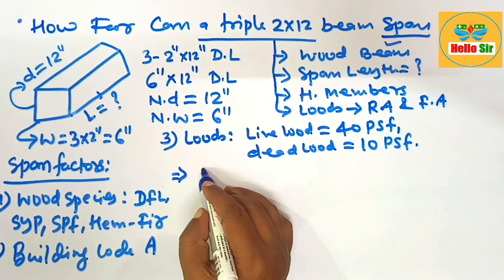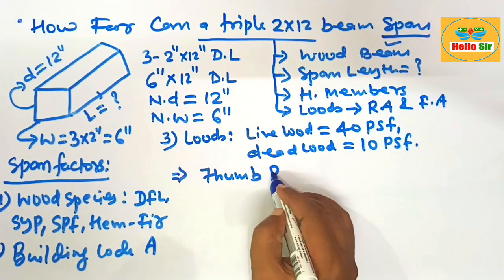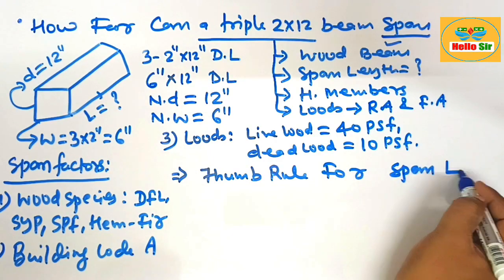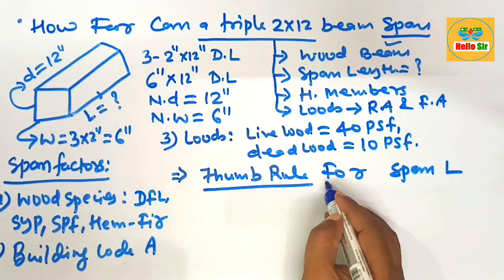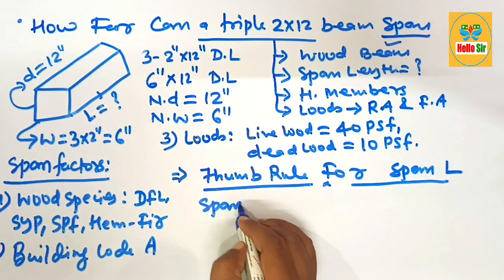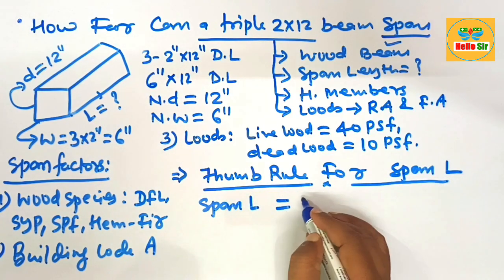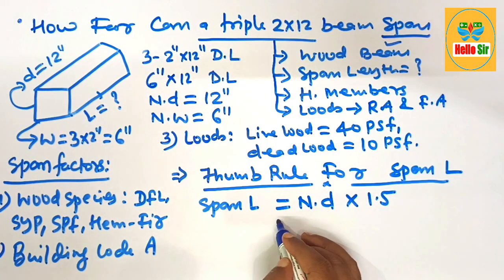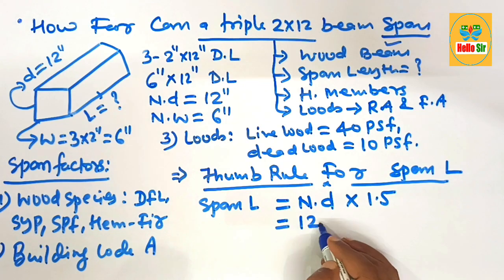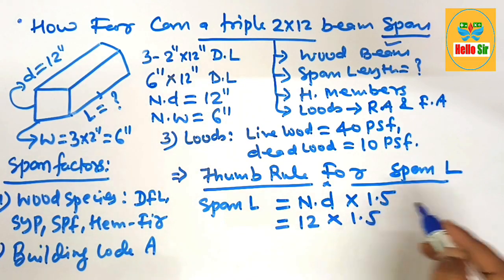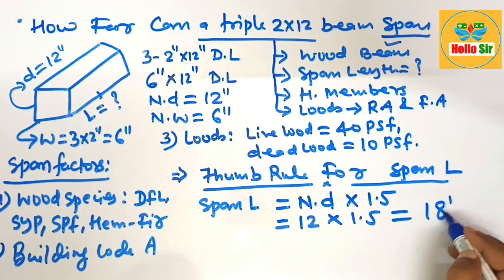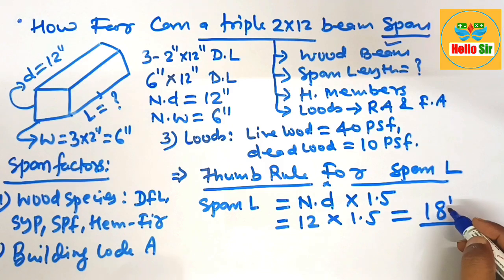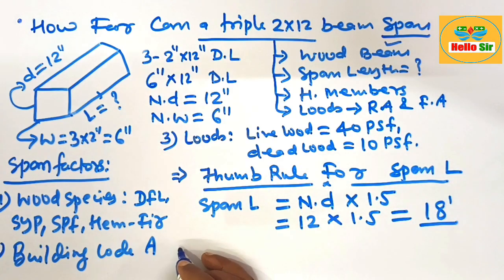Now we calculate the span length as per thumb rule. According to the thumb rule, the span length of a wood beam equals the nominal depth of the wood multiplied by 1.5. The nominal depth here is 12 inches, multiplied by 1.5, which equals about 18 feet. This means a triple-ply 2 by 12 wood beam can span about 18 feet maximum distance.